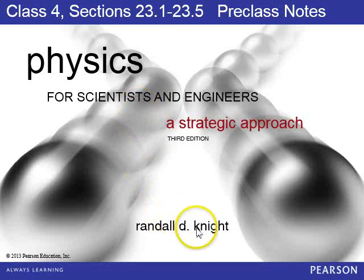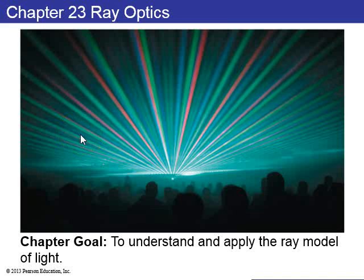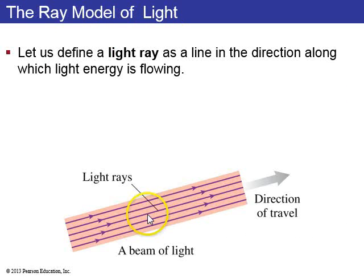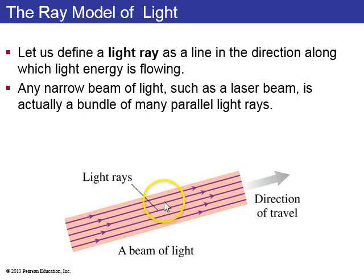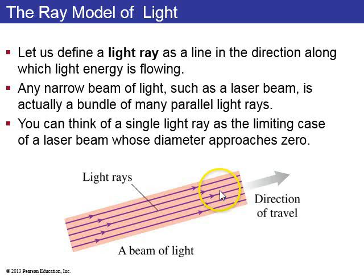Let's get started with chapter 23, the chapter on Ray Optics, where we're going to try to understand and apply the Ray Model of Light. A light ray is a line along the direction in which light energy is flowing. If you have a narrow beam of light, such as a laser beam, it's actually a bundle of many parallel light rays. You can think of a single light ray as the limiting case of a laser beam whose diameter gets smaller and smaller.